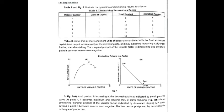Next is the explanation table showing diminishing return to factors. This means that units of labor are the variable factors in this particular example.